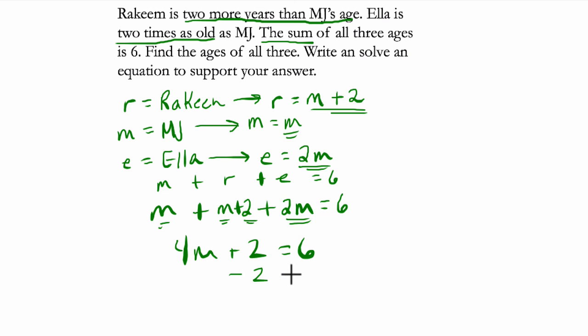And to do that, we subtract two on both sides. We get four M equals four. Divide both sides by four. So four divided by four is one. Four divided by four is one. So this means MJ is one years old.